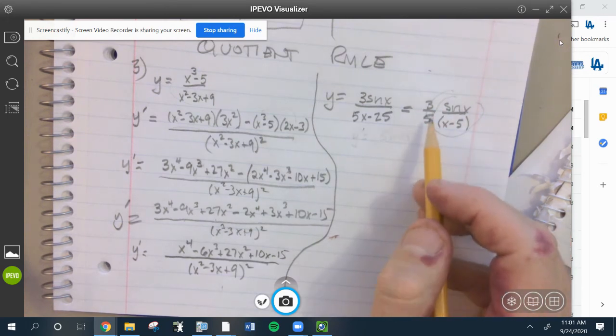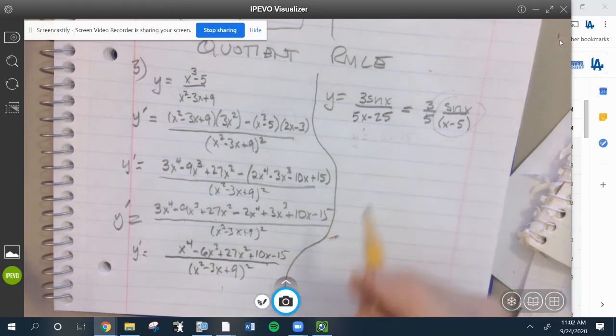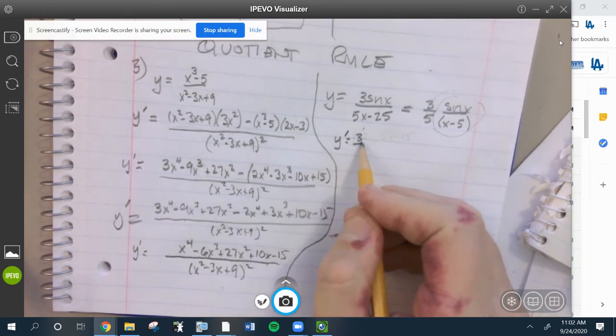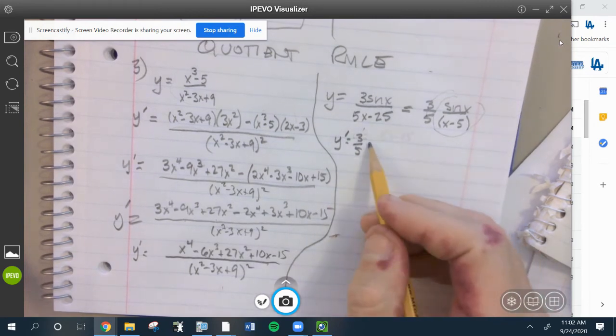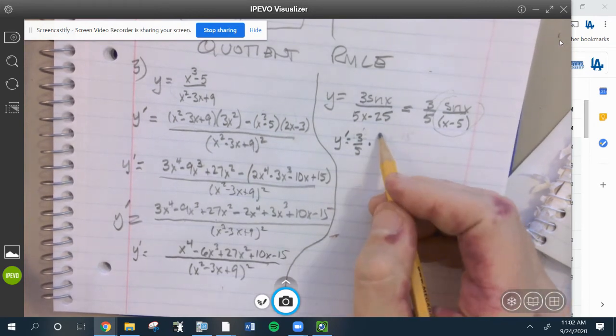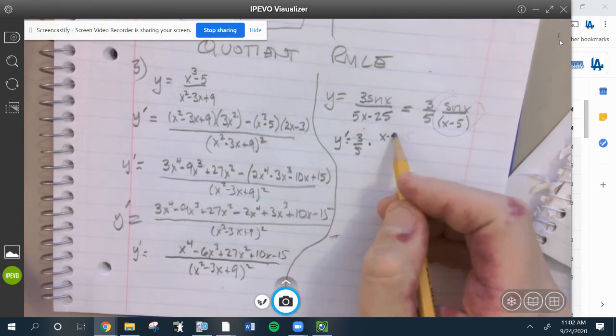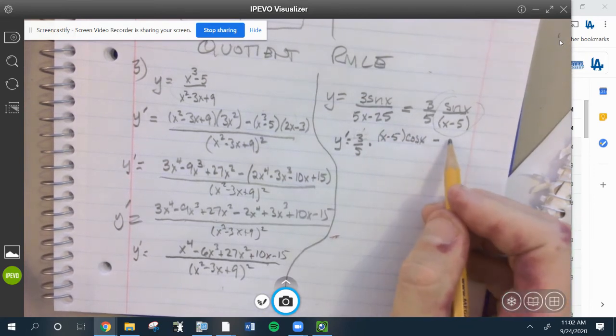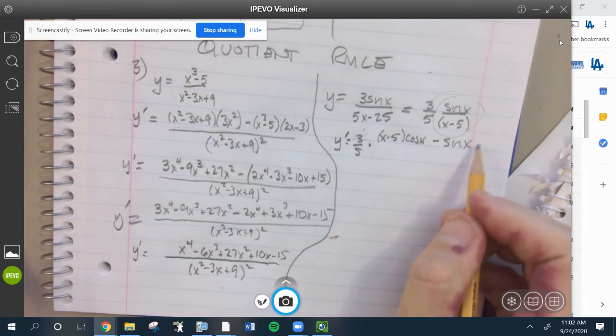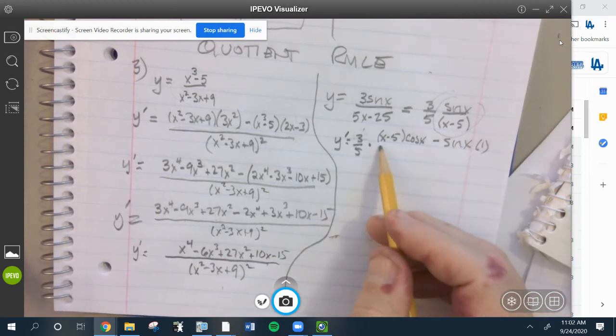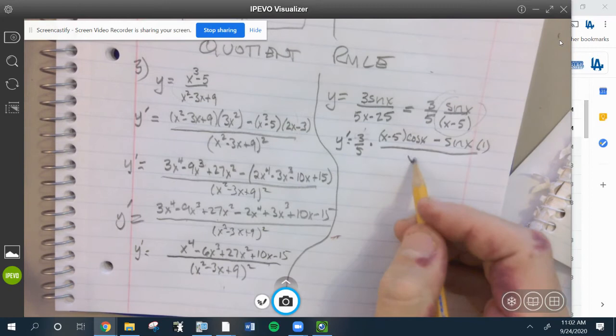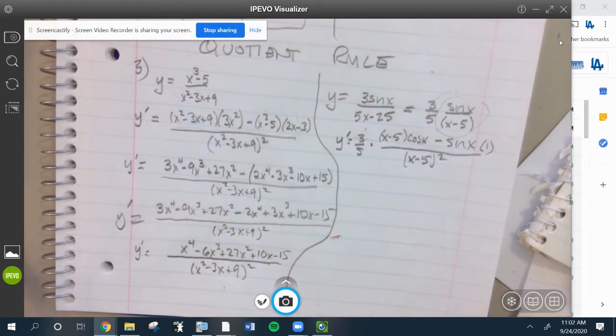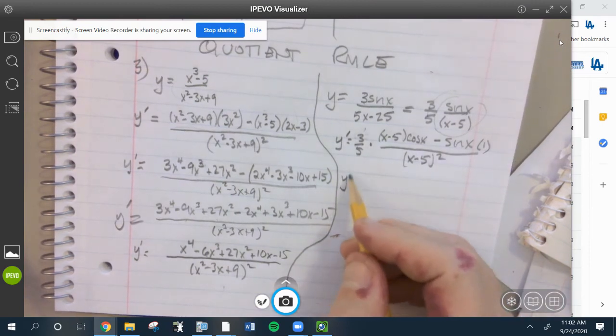So this is a much easier function to differentiate. Three-fifths is a constant multiple, so we can just pretty much ignore it - don't forget about it, but you can ignore it. So we have three-fifths times the quotient rule, which is the bottom times the derivative of the top minus the top times the derivative of the bottom, which is only one now, which is good, over X minus five squared.